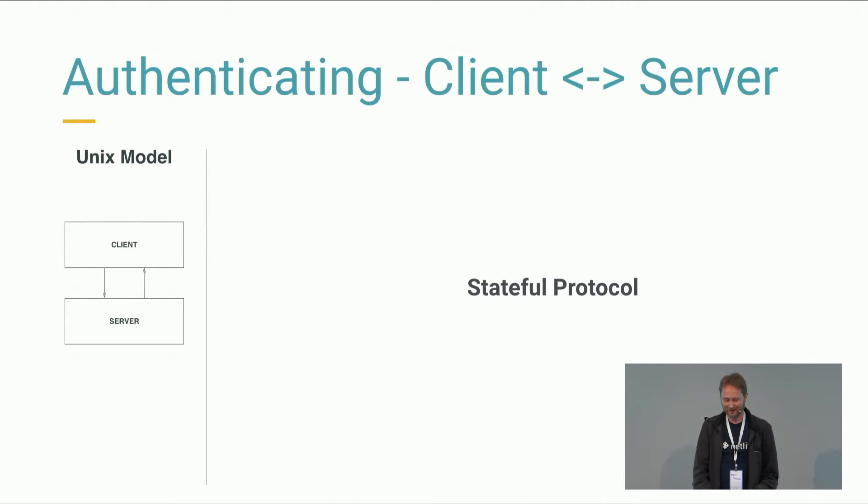That brings us to the question: when we start having this architecture where our whole front end lives directly on a content delivery network and gets loaded in the browser — where do we handle authentication? How do we handle the stuff that we can't put in the client because it's secret, and we need users to interact before we can show it to them? Going back to the Unix model, with a stateful protocol, it was very simple.